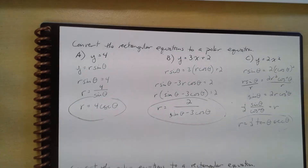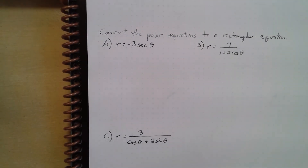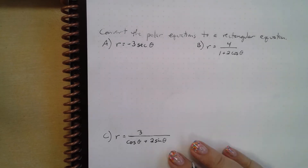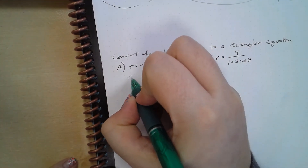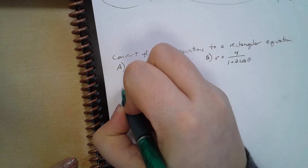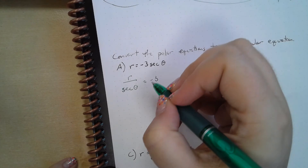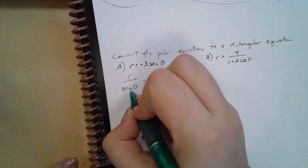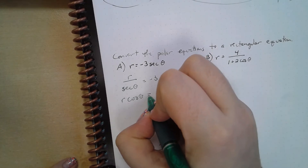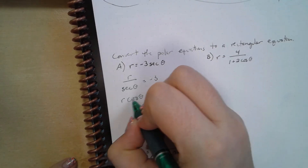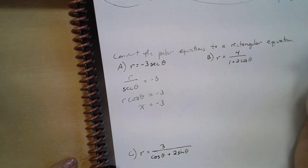Now let's convert some polar equations to rectangular. We have r = −3 sec(θ). We can rewrite this as r / sec(θ) = −3, which is the same as r cos(θ) = −3. And since r cos(θ) = x, we get x = −3.